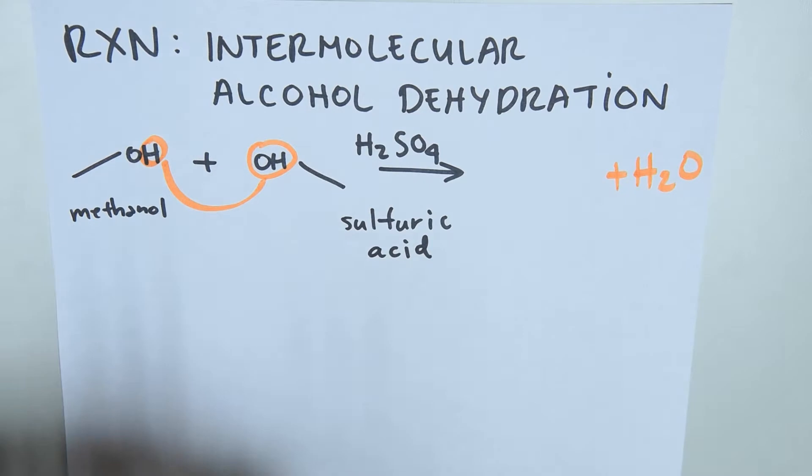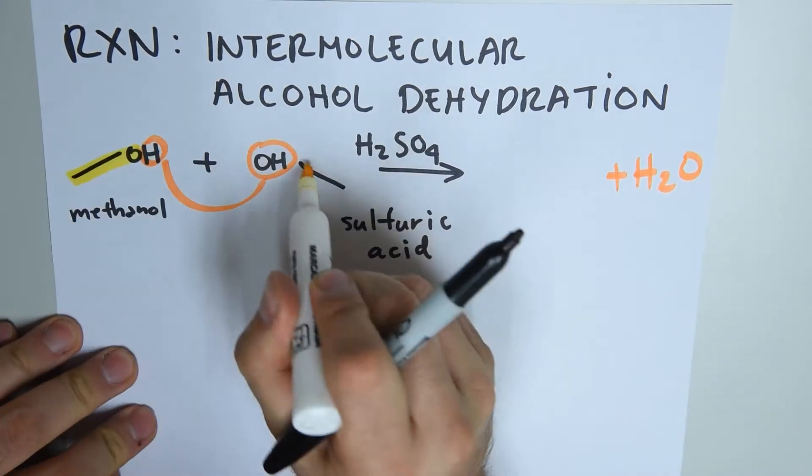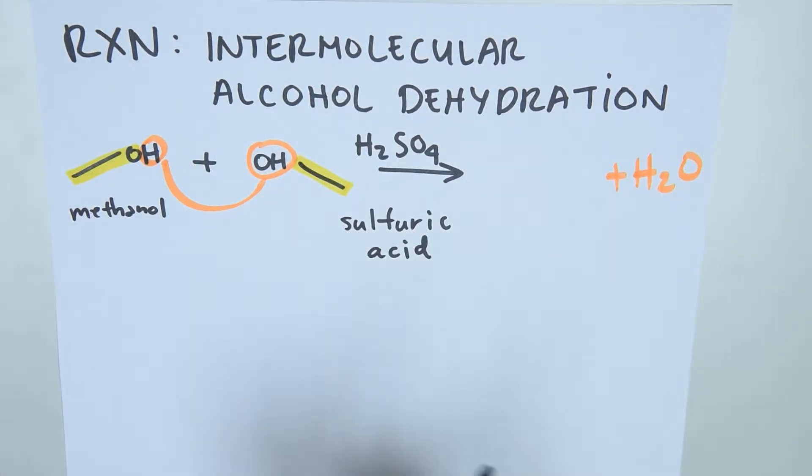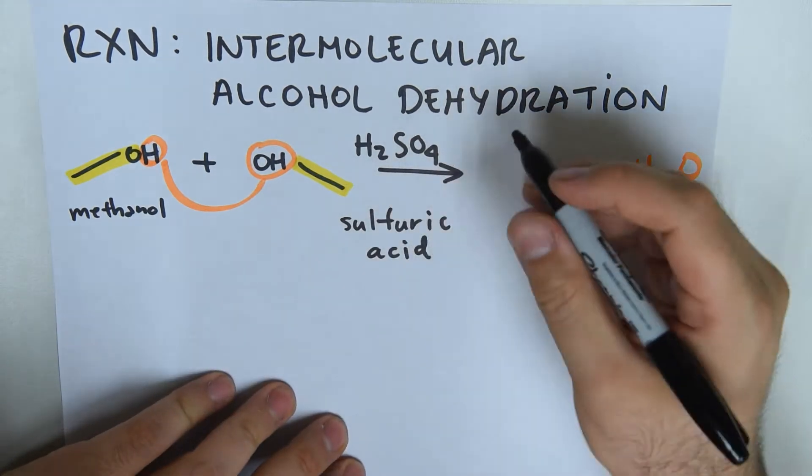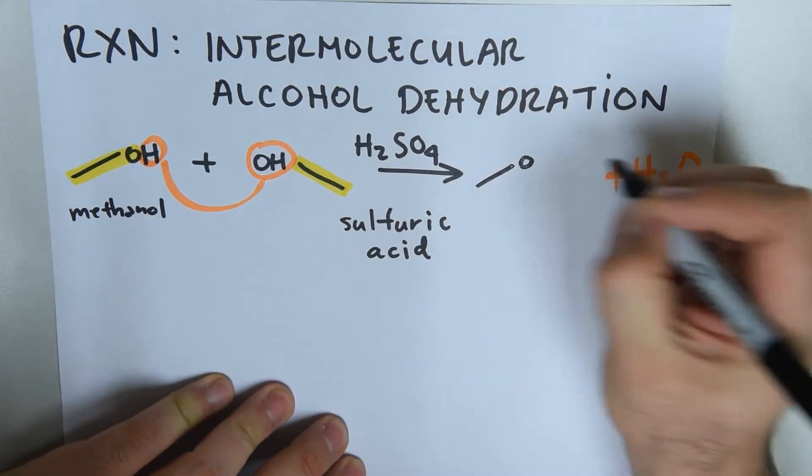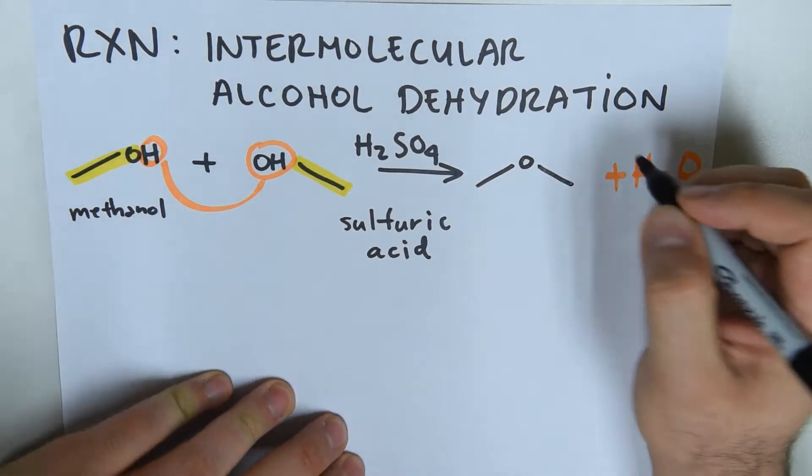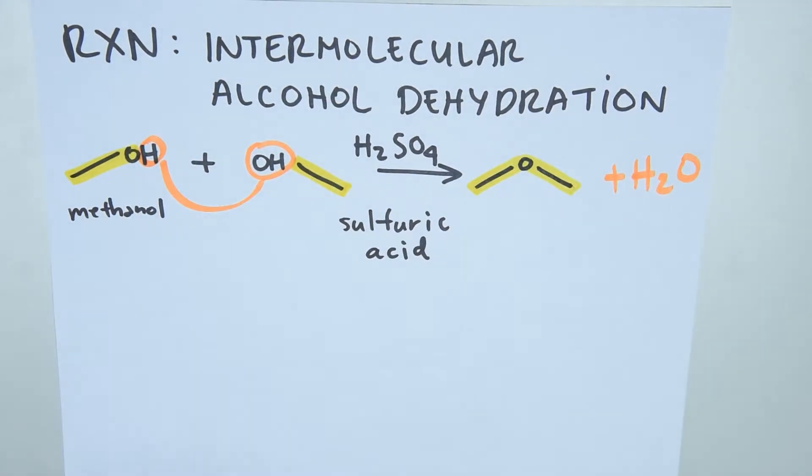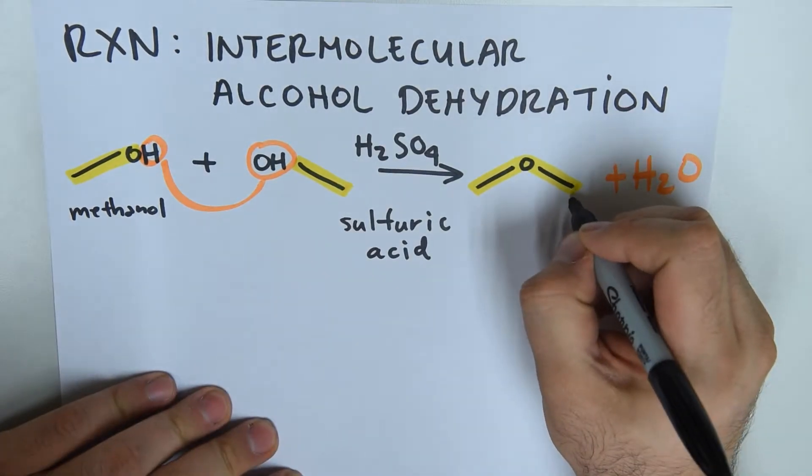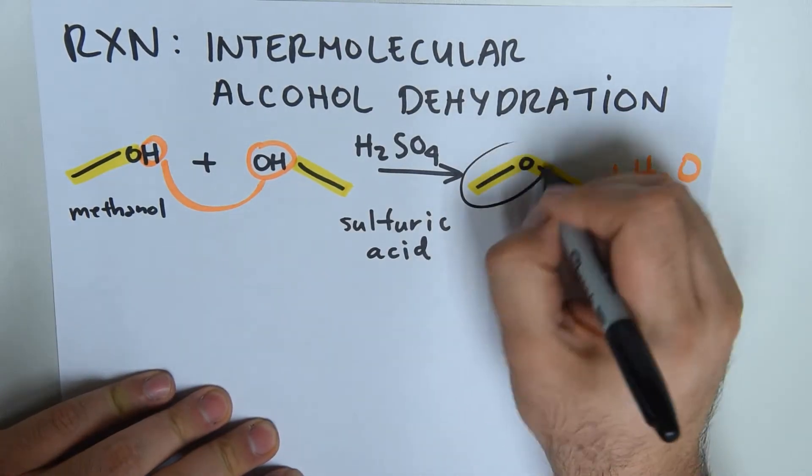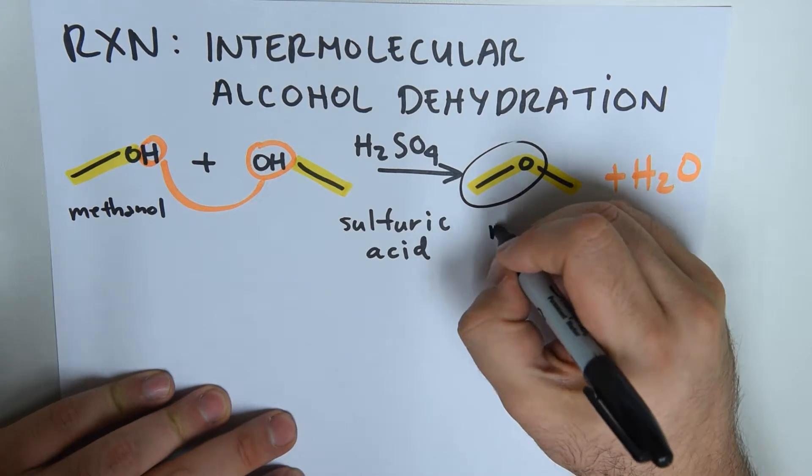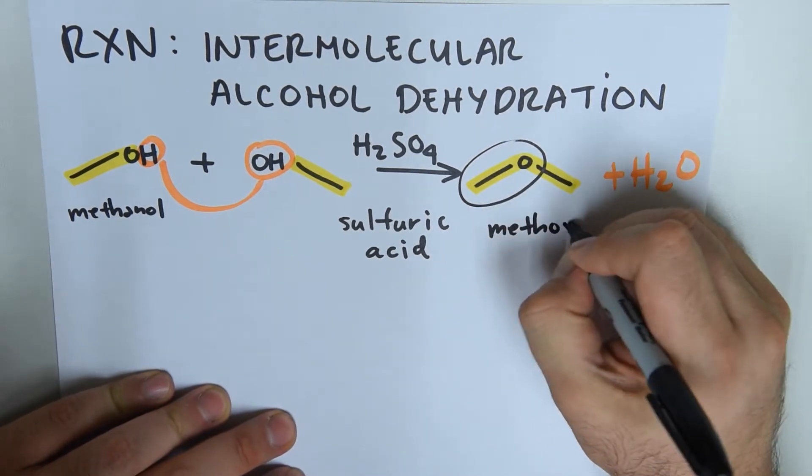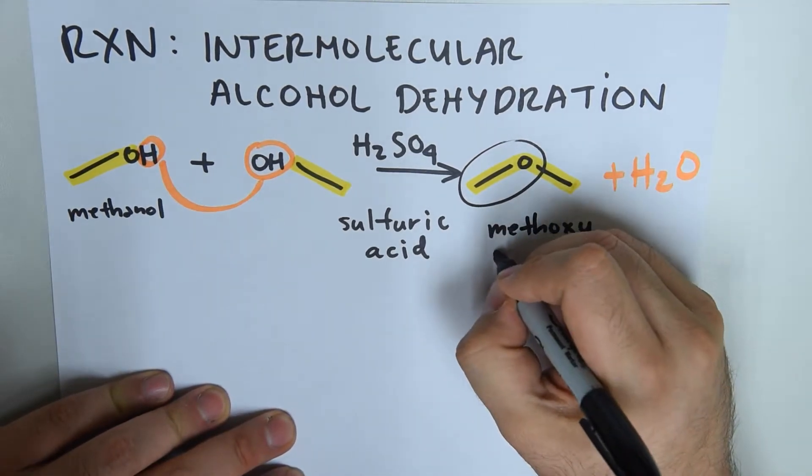What's left over? We have the carbon group attached to the oxygen and another carbon group. So we produce this ether. If you remember how we name ethers, we take the longest chain, which is one, and the rest we name as something else. So the final result is methoxy methane.